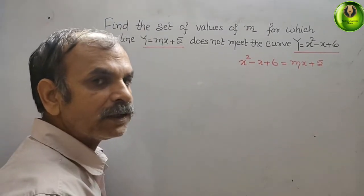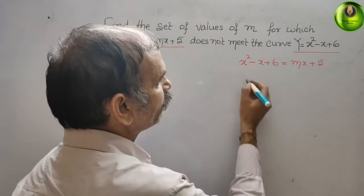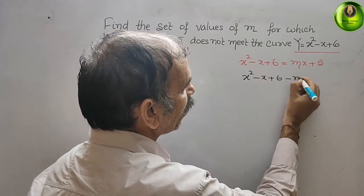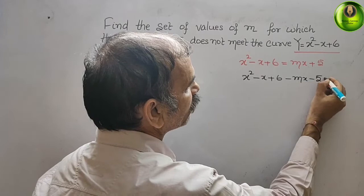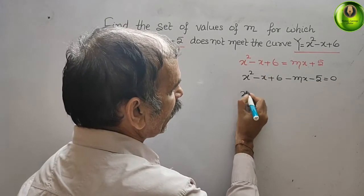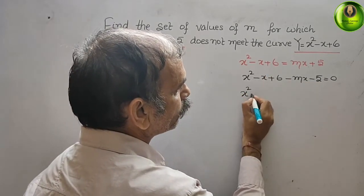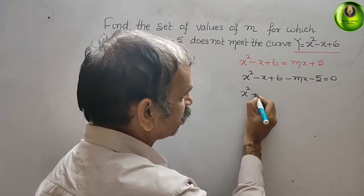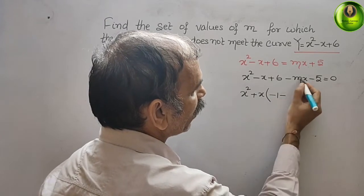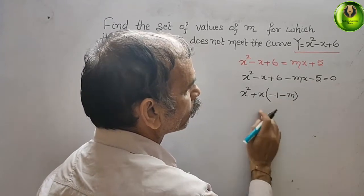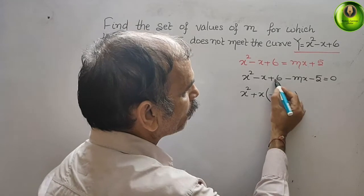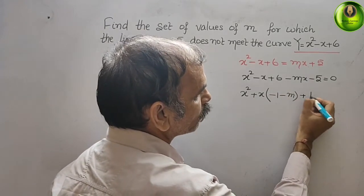Now bring everything to the left side. You will get x² - x + 6 - mx - 5 = 0. Arranging the terms, you get x² + (-1 - m)x + (6 - 5) = 0, which gives x² - (1 + m)x + 1 = 0.